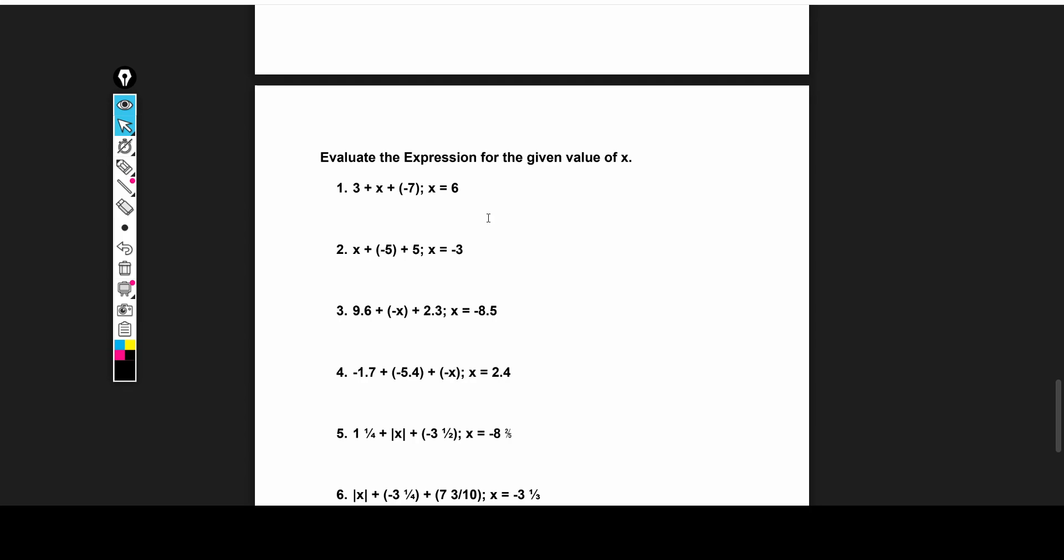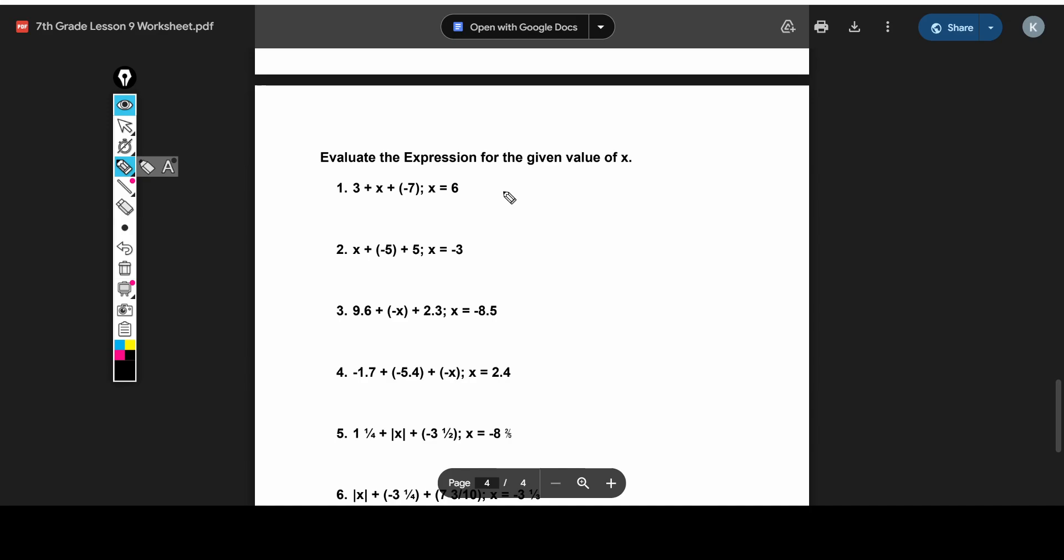Alright, moving on. Now we're going to use these values of X to find the answer, or find the value of an expression. So we substitute in the 6. So 3 plus, instead of X, we put 6, plus negative 7. 3 plus 6 is 9, and then this distributes out. We get negative 7, and that just equals 2.